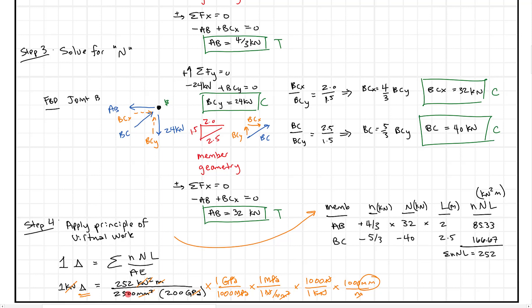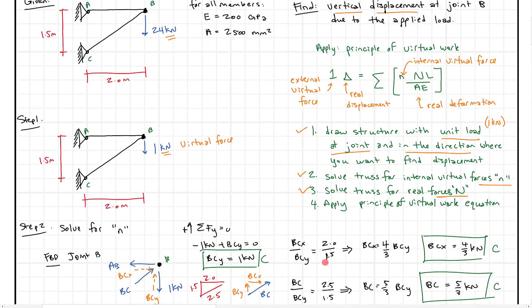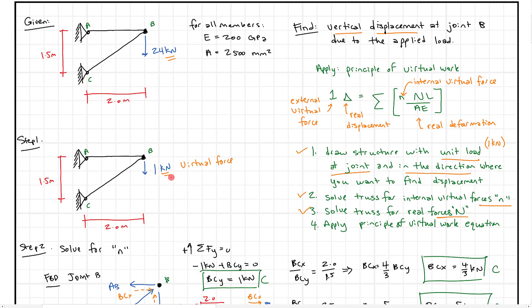Working out the arithmetic — 252 over (2500 times 200) times the unit conversions — gives Delta equals 0.504 millimeters. The positive value confirms our assumption that the displacement at joint B is downward. To summarize: we applied the unit virtual load, solved for virtual forces little n, solved for real forces big N, then applied the virtual work equation with proper unit conversions. Hope this helps — feel free to drop a comment and keep moving onward and upward.